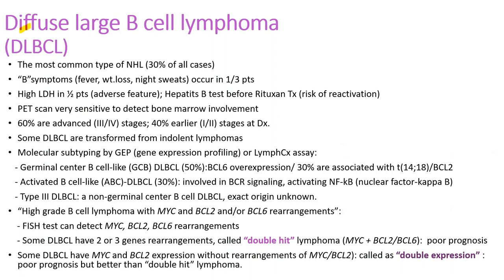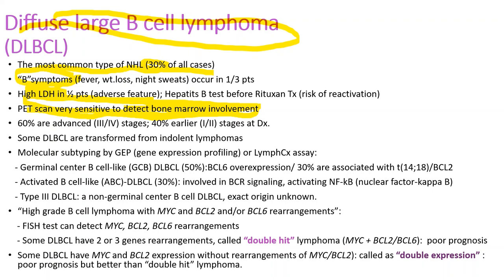Diffuse large B cell lymphoma is the most common type, accounting for 30% of all cases. Patients frequently have B symptoms and a high LDH level, which is an adverse feature. PET scan is very sensitive for detecting bone marrow involvement, so some patients may not need a bone marrow biopsy if the PET scan is positive for bone marrow involvement. Molecular subtyping by gene expression profiling or the LymphCx assay is important because the two subtypes — germinal center B cell-like and activated B cell-like — have different behaviors. The germinal center B cell-like subtype has a better prognosis, while the activated B cell-like subtype has a worse prognosis requiring more aggressive treatment.